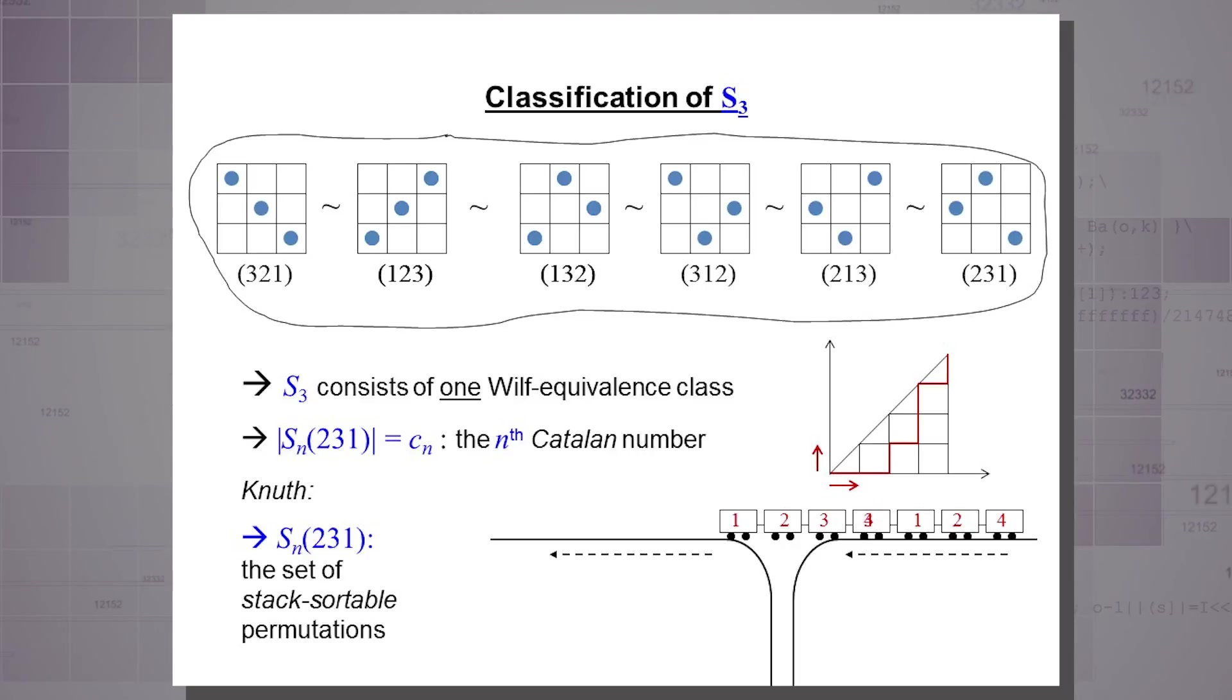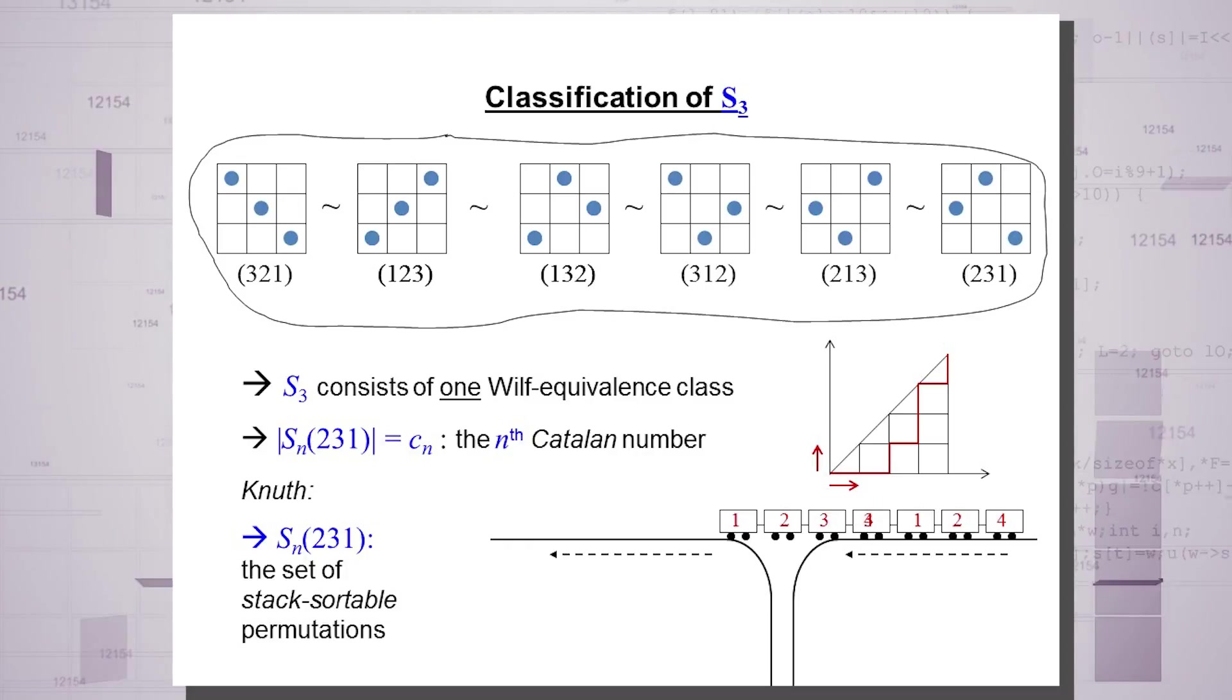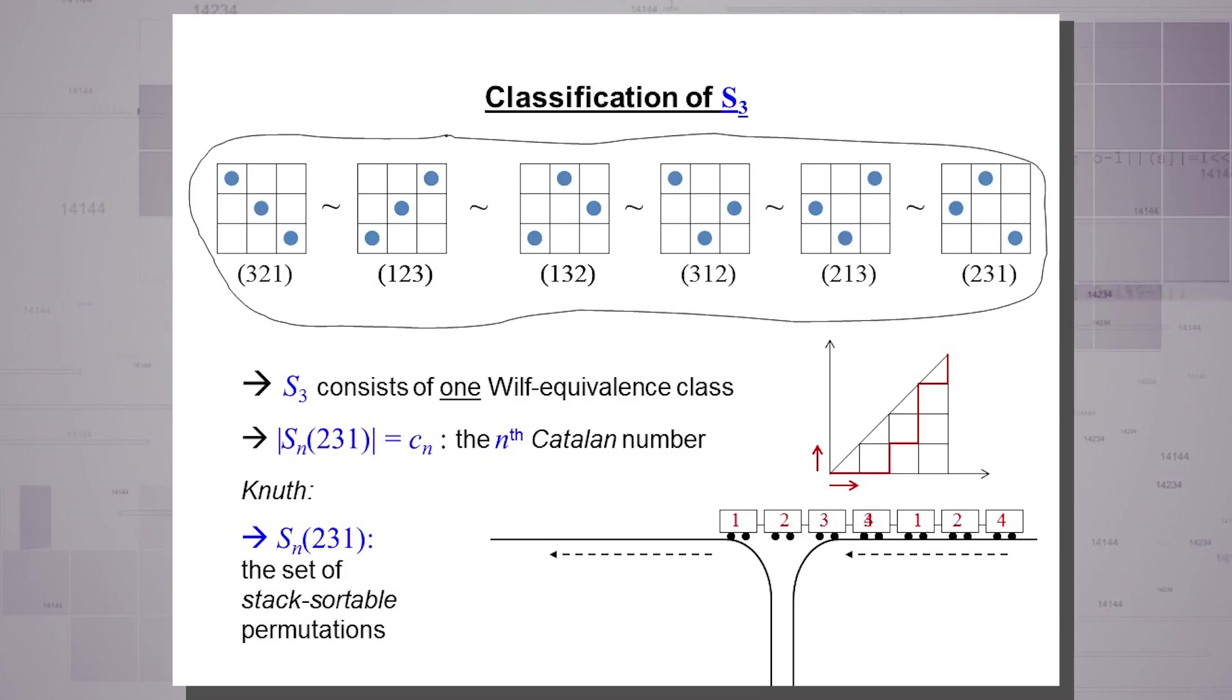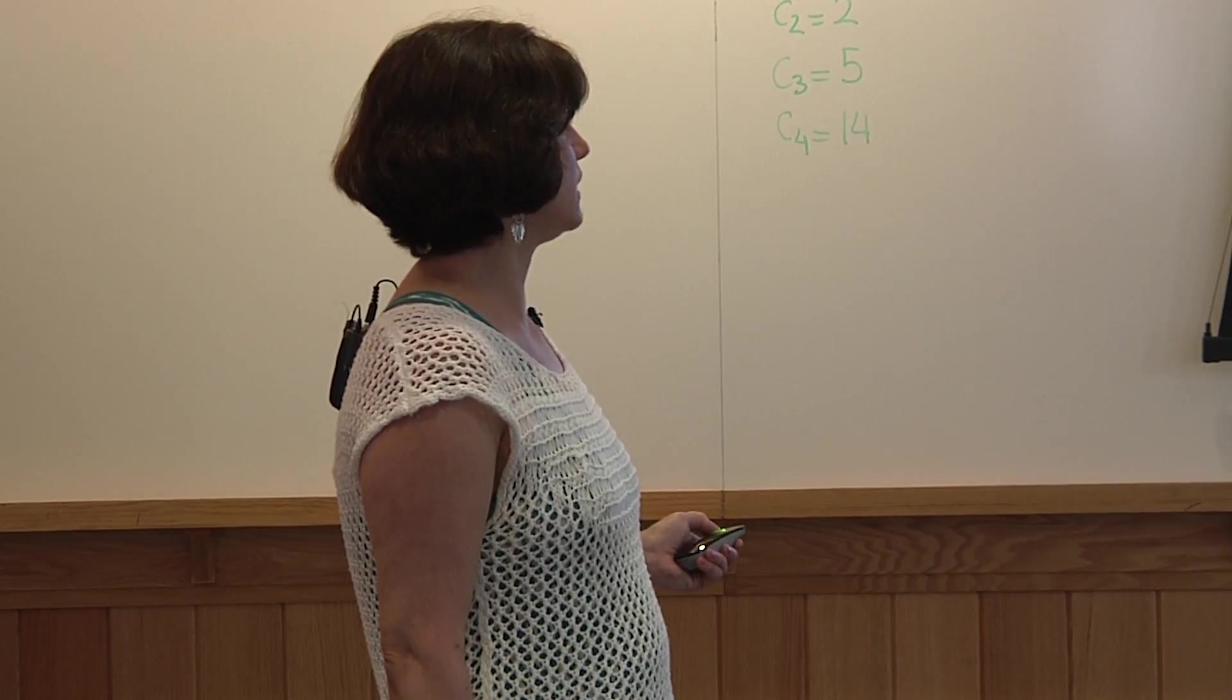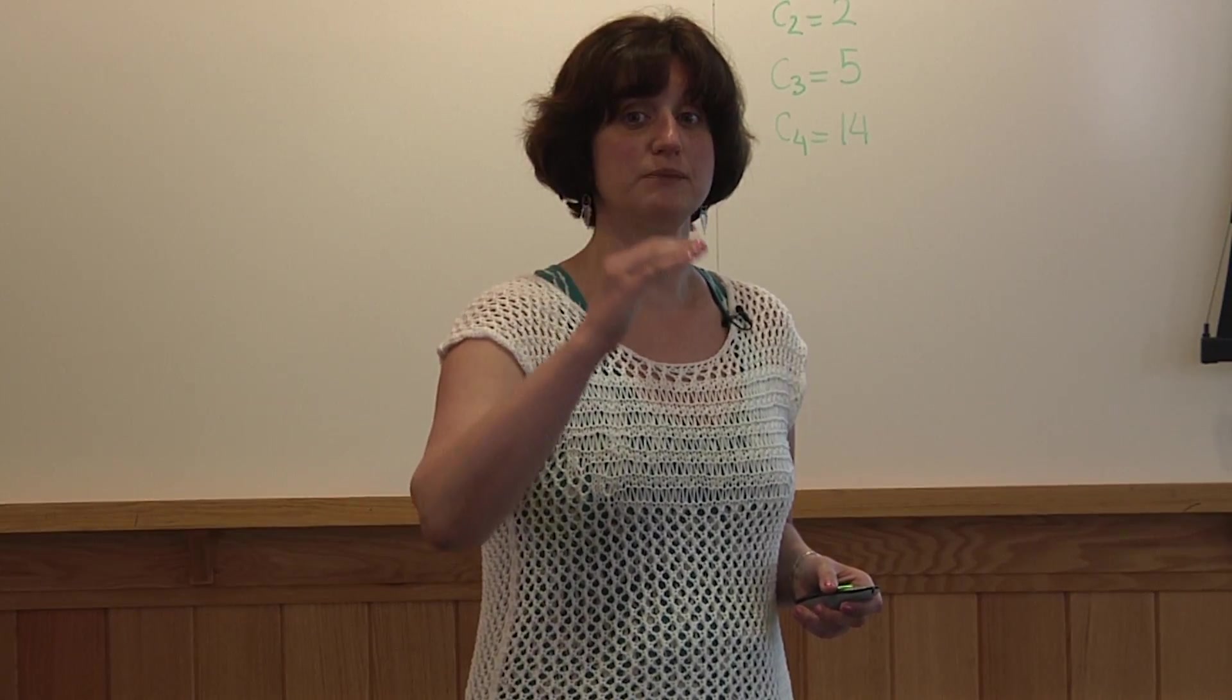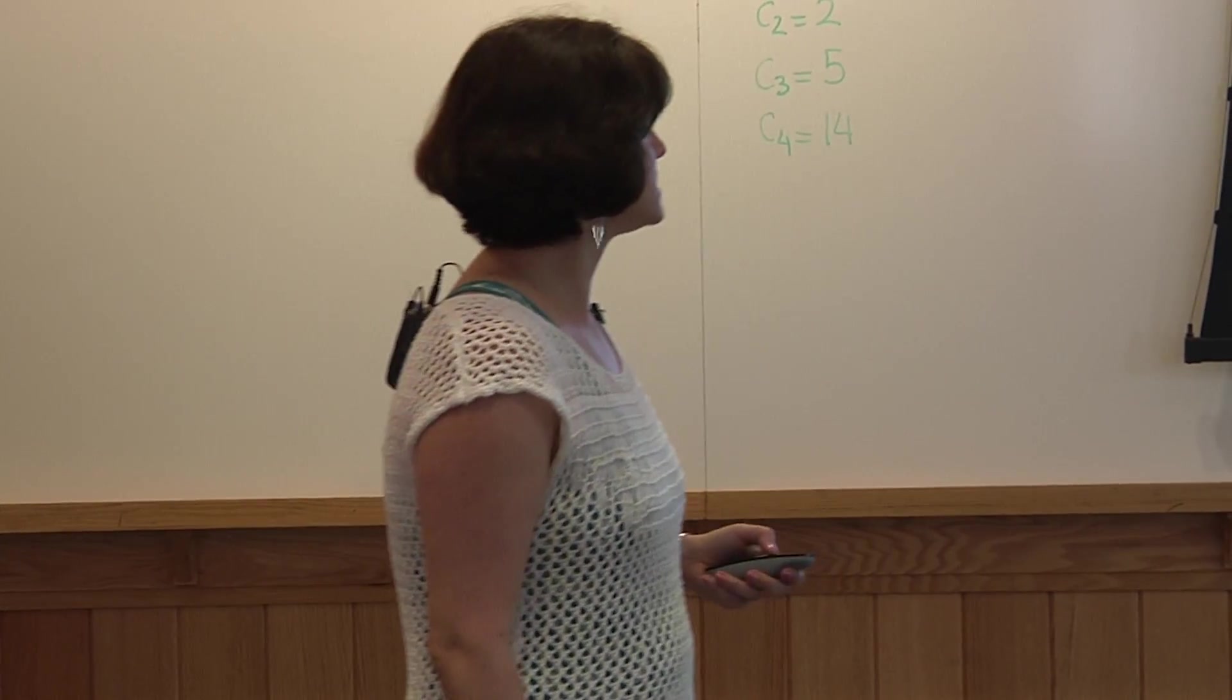But can we sort this one? 3, 1, 4, 2. And the answer is no. Let us try. First, we have to stack 3. Then we have to let 1 go. 4 has to be stacked because 2 is coming, but then 3 is buried dead underneath that 4. You cannot free the 3. So, what happened? What was the obstruction that did not allow us to sort this one, but allowed us to sort the previous one? There is only one possible obstruction. It is the sequence 2, 3, 1, which is contained right here. 3, 4, 2 is a subsequence of the same pattern at the same time. And if you don't avoid this one, you won't be stack sortable. So, Knuth noticed this and he said, okay, we like zeros and ones in computer science.